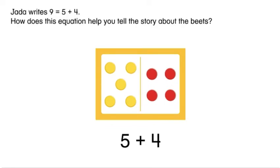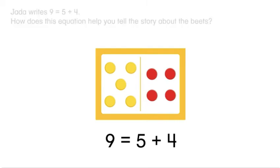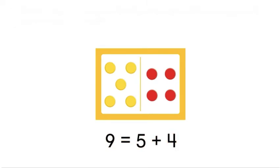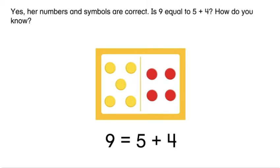Jada writes nine equals five plus four. How does this equation help you tell the story about the beets? Each part of the equation represents the whole or the parts. Does Jada use the correct numbers and symbols? Yes, her numbers and symbols are correct.